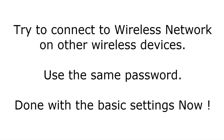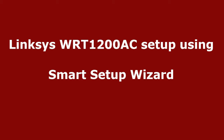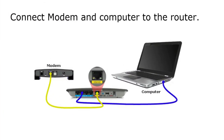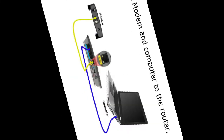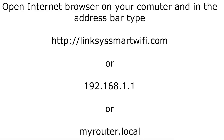Those are the basic settings of your wireless router — internet connection settings and wireless settings are now complete. Now let's move on to how to set up the Linksys WRT1200 AC router using the Smart Setup Wizard. The physical connections remain the same: connect the modem to the internet port on the router and connect your computer to one of the four LAN ports. Then open the internet browser.